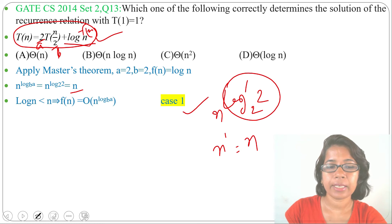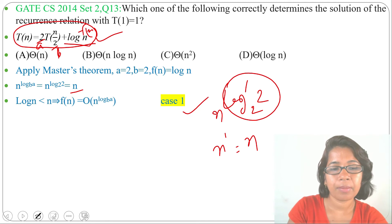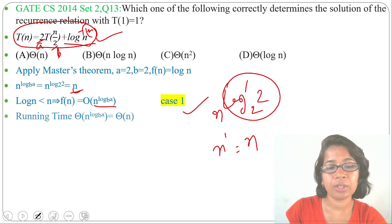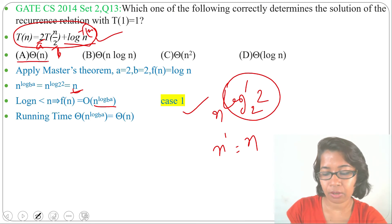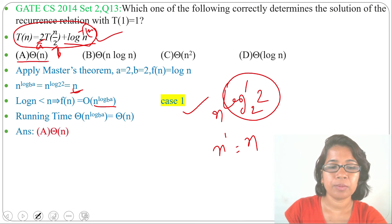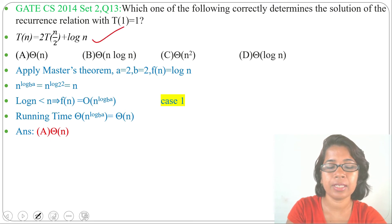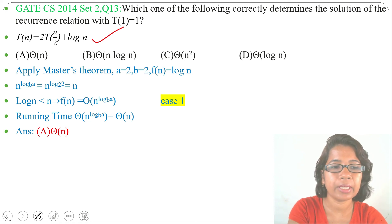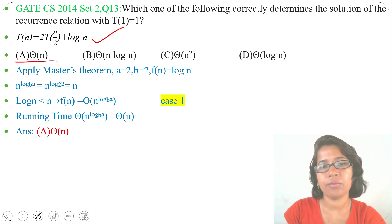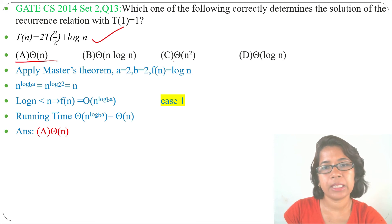In Case 1, the running time is Θ(n^(log_b a)), and since n^(log_b a) = n, the running time is Θ(n). Checking the options, this is present in option A, so the answer is option A: Θ(n). You can also use back substitution or recursion tree method — you will get the same answer. If this lecture was helpful, please like and subscribe.